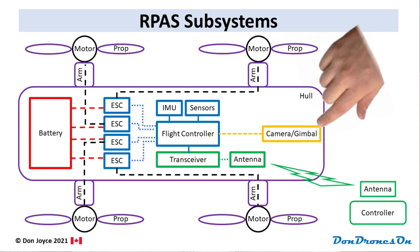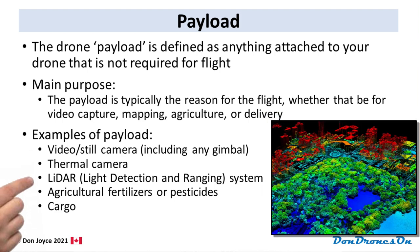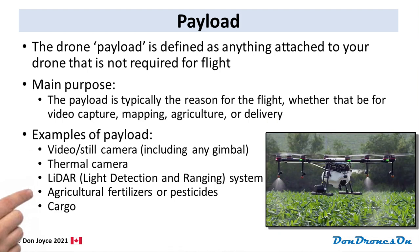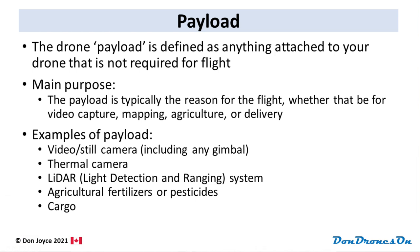The last item on our drone diagram is the camera, or more generically the payload. The payload is defined as anything attached to your drone that is not required for flight — so any cameras other than cameras used for obstacle avoidance, thermal sensors, laser mapping devices like LiDAR, agricultural sprayers or cargo would be considered payload. The weight of any payload at takeoff time is included when determining the kind of flight, for example above or below the 250 gram threshold.